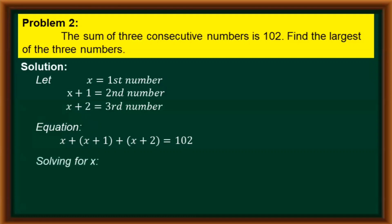We can now solve for the value of x. Adding similar terms, we have x plus x plus x on the left side, which becomes 3x. And 1 plus 2 equals 3. So our simplified equation is 3x plus 3 equals 102.